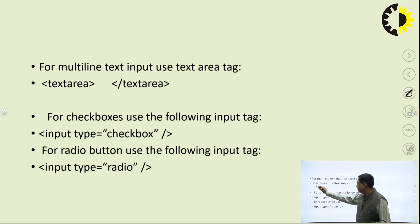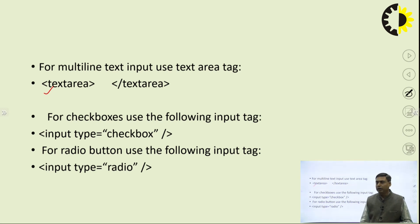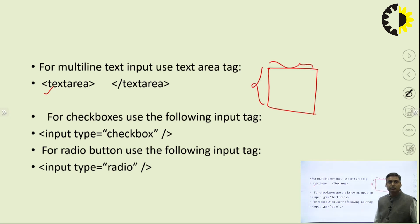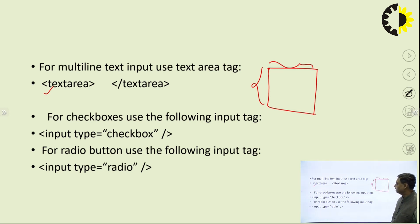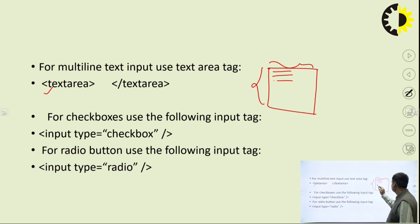Next is the text area. If you want more information that does not fit within the size of a text box, we can use the text area. In the case of a text area, a large text box is created with a defined number of rows and columns. By default, a text area is created with a standard number of rows and columns, and larger information can be written in it.